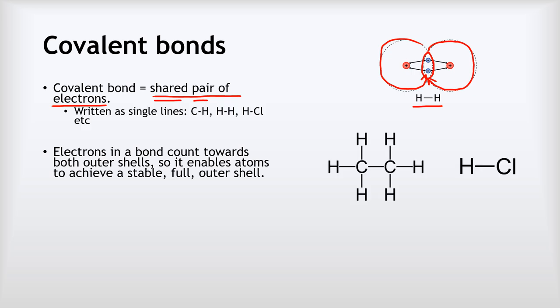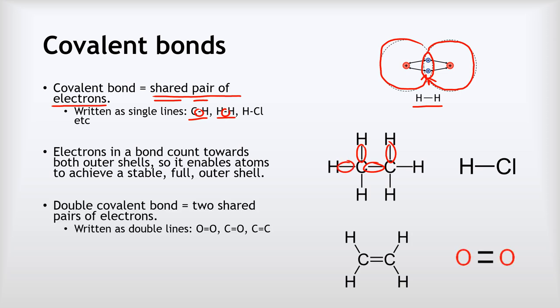When we write covalent bonds in diagrams, we represent them as two atoms with a single line between them. Each of those single lines represents a covalent bond — a shared pair of electrons. We can also get double covalent bonds that involve two shared pairs of electrons, and we write those as a double line. These double lines are not equal signs; they are representing double covalent bonds involving two shared pairs of electrons.